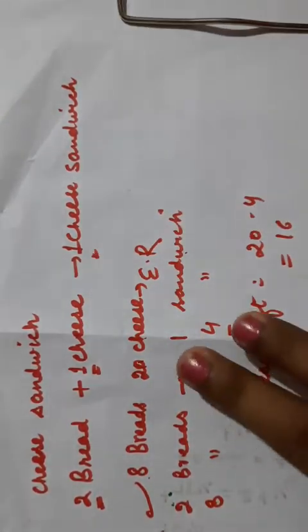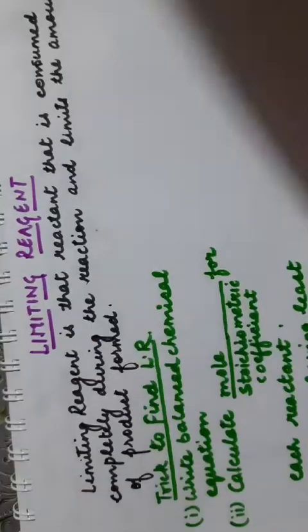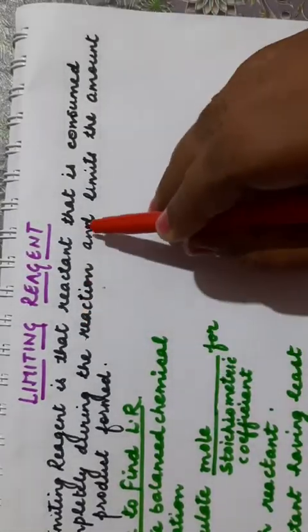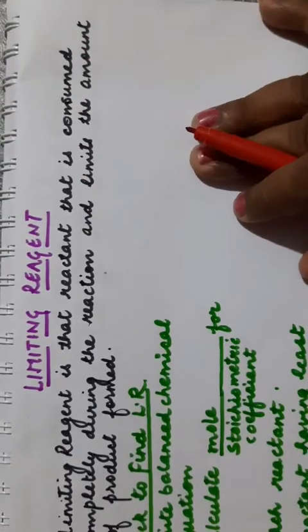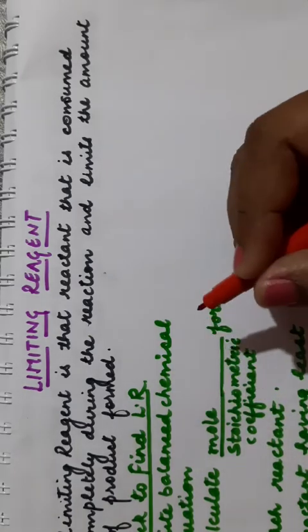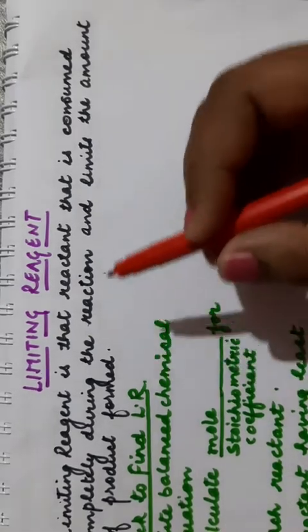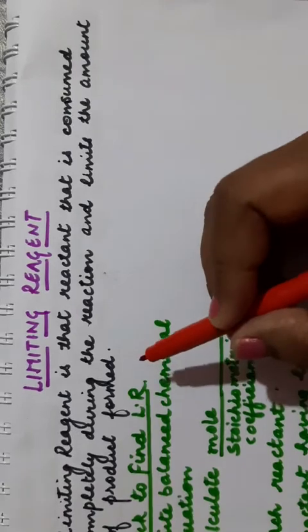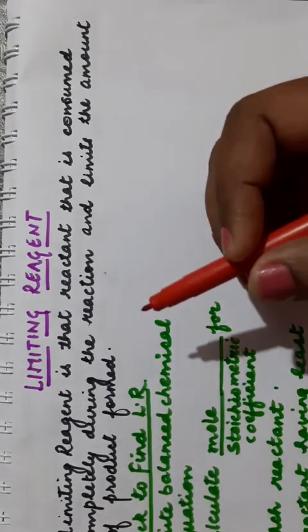The cheese left behind is known as the excess reagent. Bread is the limiting reagent here, and the formation of sandwiches will depend upon the number of breads - that is the limiting reagent. The definition is: the limiting reagent is that reactant that is completely consumed during the reaction. So product formation will depend upon the limiting reagent.